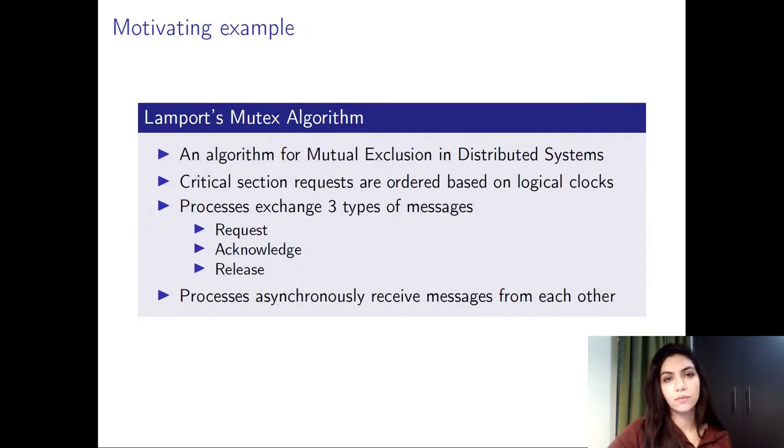We're going to start by introducing a motivational example to highlight our contributions. We have chosen Lamport's Mutex algorithm. It's an algorithm for mutual exclusion in distributed systems where processes request access to a critical section and each request has a logical clock value where requests with lower values have higher priority. A process starts by sending a request to access the critical section to all other processes with a logical clock value, and then waits for acknowledgement from all other processes to give it the right to enter the critical section.